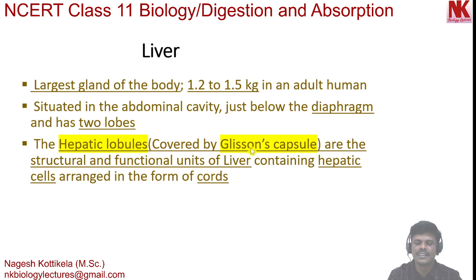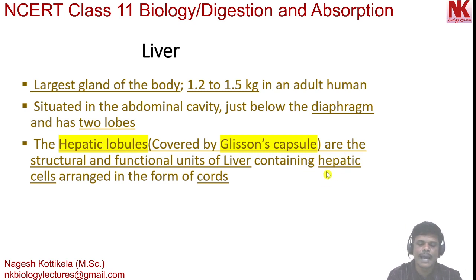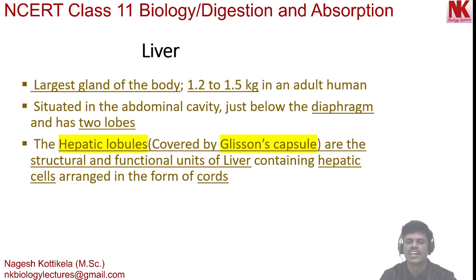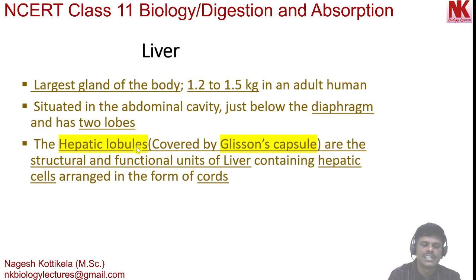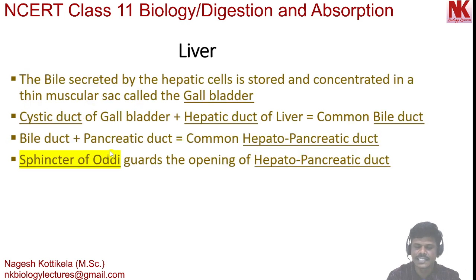Hepatic lobules are covered by Glisson's capsule. Francis Glisson was a British physician and anatomist. Glisson's capsule is a thin fibrous connective tissue sheath that covers hepatic lobules — a very important fact. The bile juice is secreted by the hepatic cells.